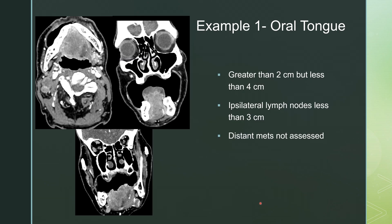Example one: if you change the windows, there is a hyperdense mass involving the oral tongue. Here's normal muscle, which is a little bit lower density than the mass. It measures greater than two centimeters but less than four centimeters. There are ipsilateral lymph nodes — one is even partially necrotic in the center — but they measure less than three centimeters. Distant mets are not assessed. You can see the difference in density between the tongue itself and the cancer, and here's another necrotic node. So this one would be a T2N2MX.